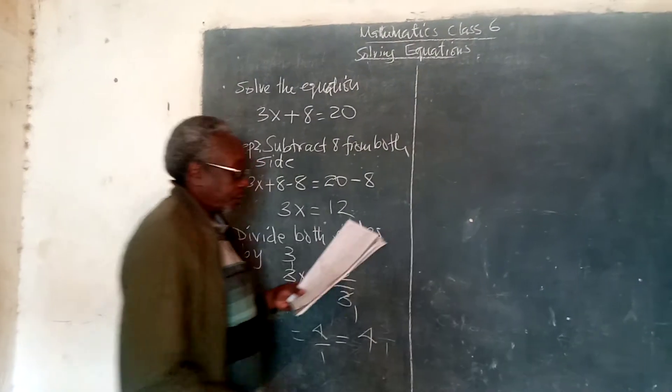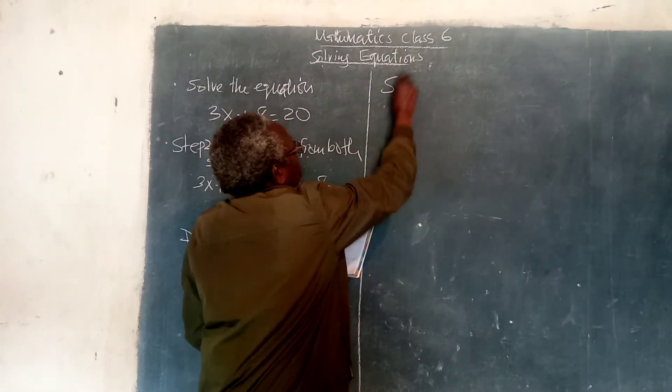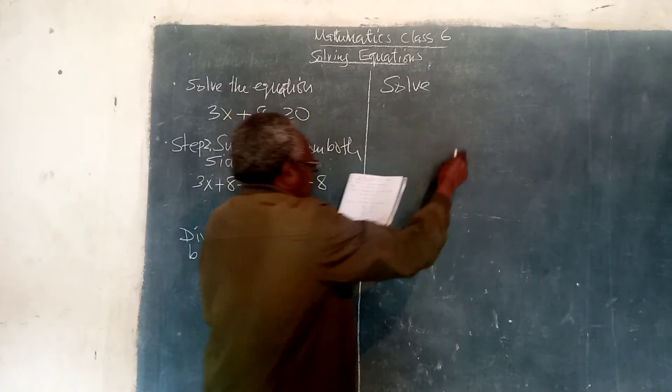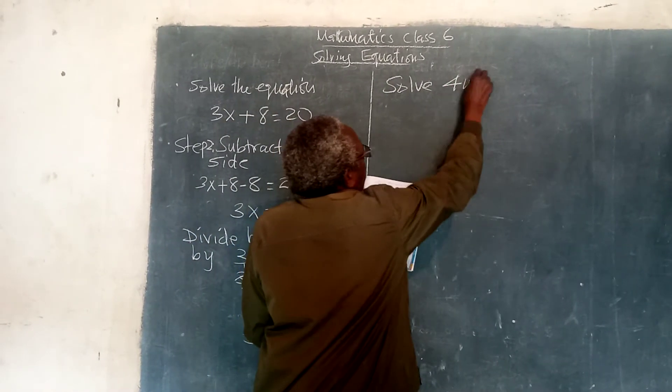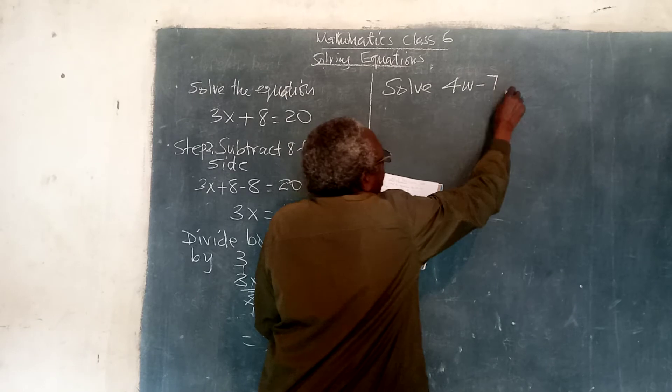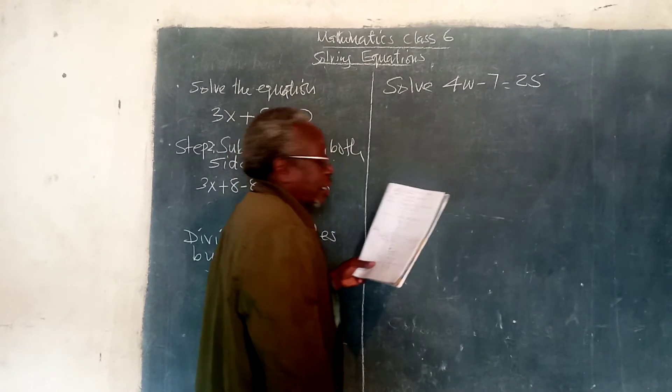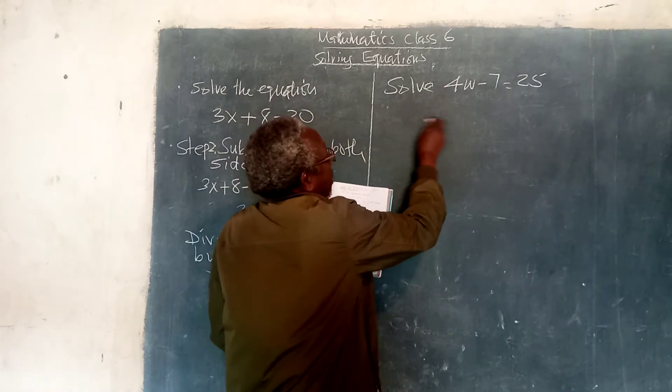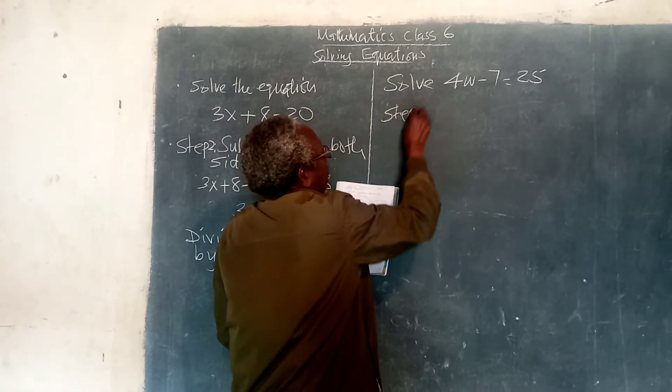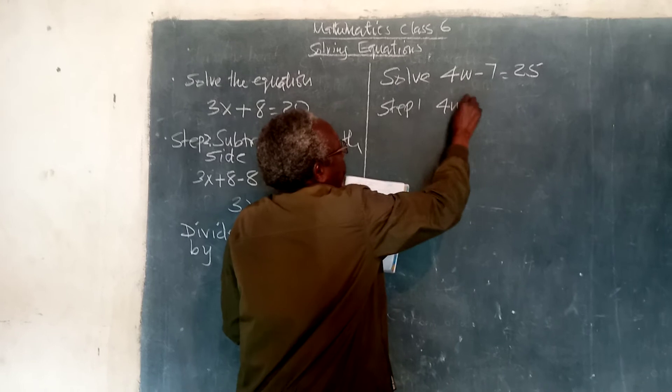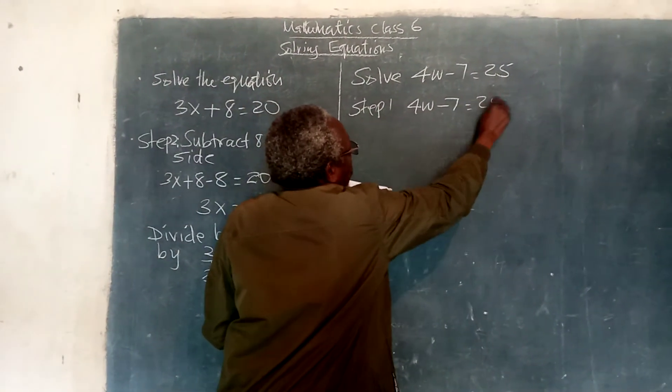Our second equation says solve 4w take away 7 is equal to 25. Now, in this one, it means, in step 1, 4w take away 7 is equal to 25.